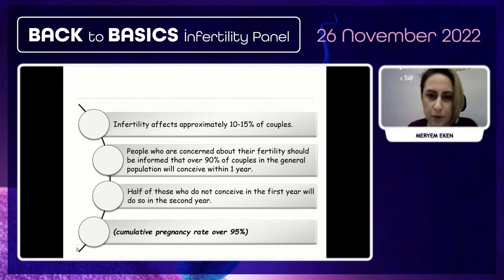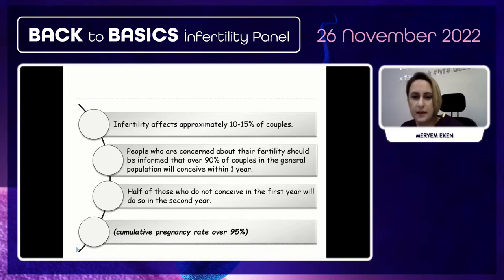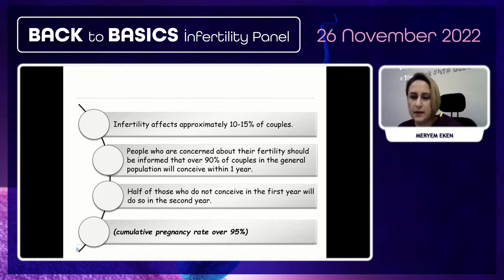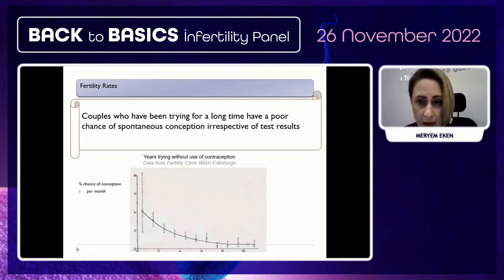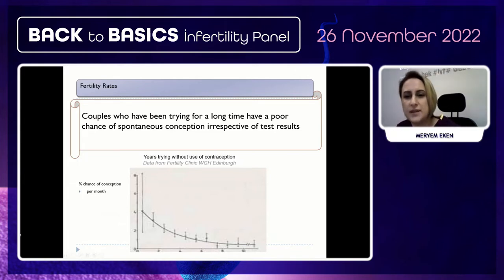Infertility affects approximately 10 to 15% of couples. People concerned about their fertility should be informed that 90% of couples in the general population will conceive within one year. Half of those who do not conceive in the first year will do so in the second year, making the cumulative pregnancy rate in the second year 95%. However, couples who have been trying for a long time have a poor chance of spontaneous conception irrespective of test results.